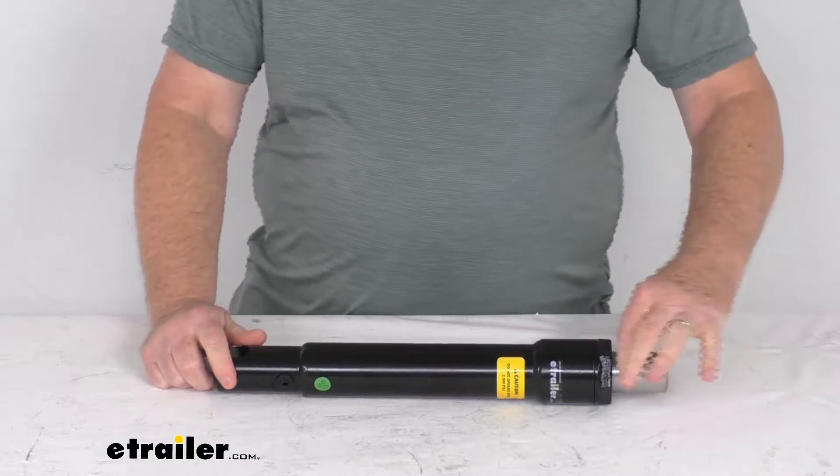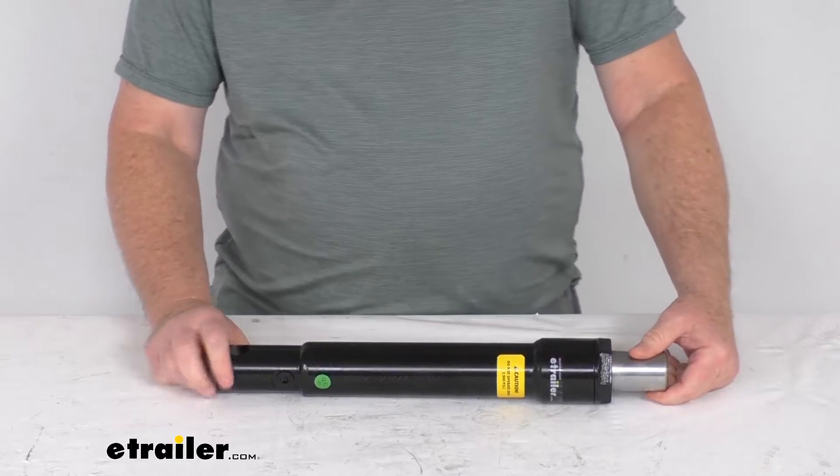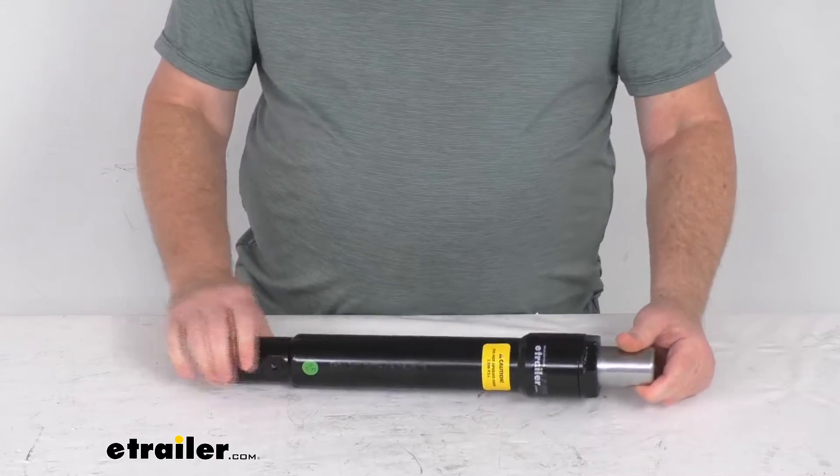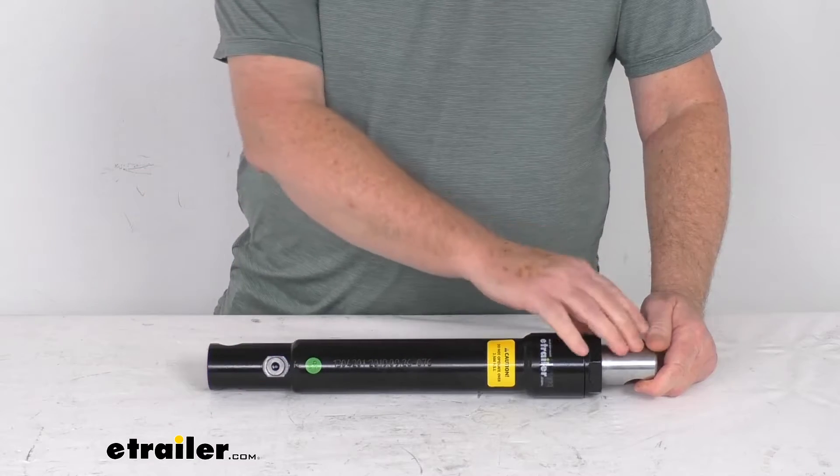Basically this rod right here is what will extend and retract inside the cylinder to lift and lower the blade so that you can easily clear the roads. It has one port right down here that allows the pressing power of the single-acting cylinder.